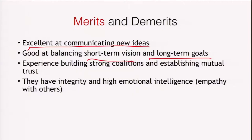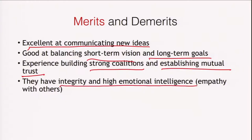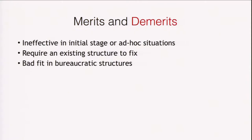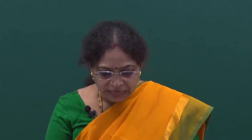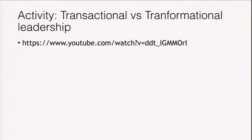Transformational leaders are experienced at building strong coalitions and establishing mutual trust — they give trust, demonstrate trust, and in turn receive trust. They have integrity and high emotional intelligence and can empathize with others. However, like any style, transformational leadership has demerits: it is ineffective in initial stages or ad hoc situations, requires an existing structure in order to be functional, and is a bad fit in many bureaucratic structures.